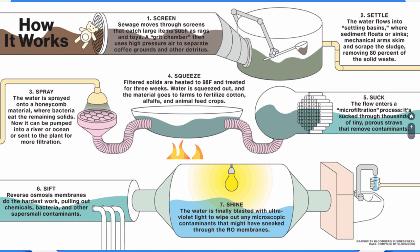If it keeps going, the next stage is the suck stage — microfiltration. The water from the squeeze stage gets sucked through tiny porous straws. Think of a bunch of really tiny straws all lined up — porous meaning they have tiny holes water can travel through. The water gets sucked through them, and that removes even more contaminants.